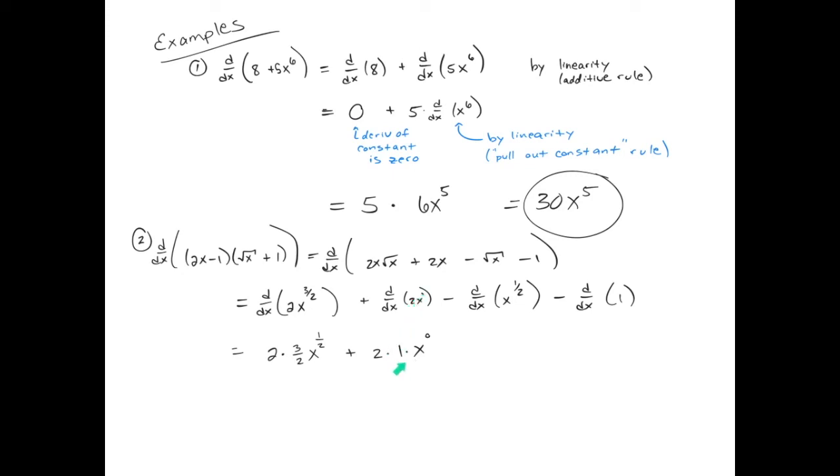Remember, x is to the one power. And so the one comes down in front. And then we decrease the power by one to get x^0. Don't forget that x^0 is just one. So it turns out that the derivative of x is just one. That's a great thing to remember for future reference.